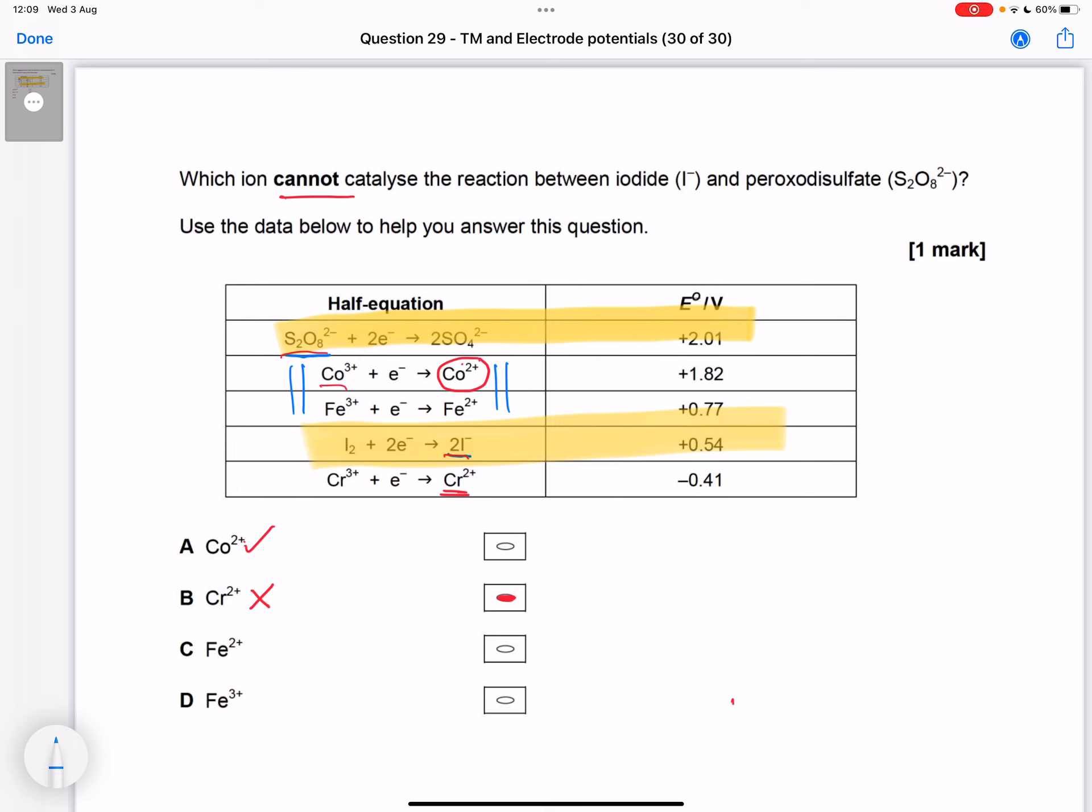So any of these four - cobalt 2+, cobalt 3+, iron 3+, iron 2+ - would act as a catalyst for this overall reaction. So the only things we couldn't use are chromium 3+ or chromium 2+, so we're going to select answer B.